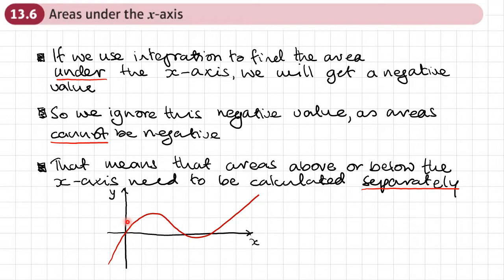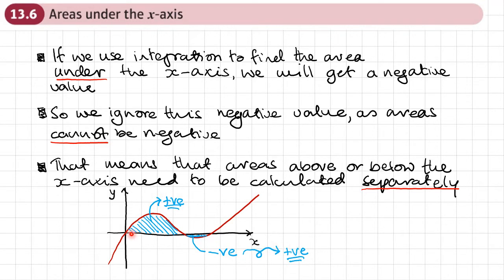Here's an example with a graph. If I want the area of two separate bits — one above and one below the x-axis — the part above gives a positive answer, which is fine. But the part below gives a negative answer, so I flip it to make it positive, then add them together. I need one set of limits for the upper region and a different set of limits for the lower region.